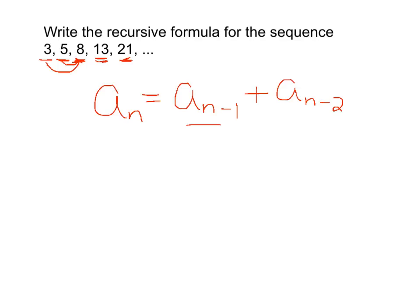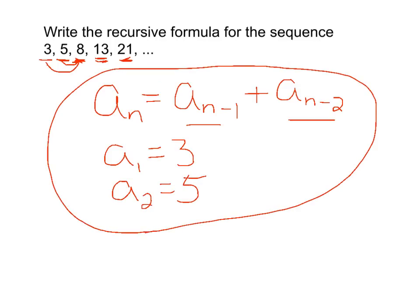Now, since we referenced two previous terms in the formula, we need to give two starting terms. So we're going to let people know that the first term, a sub 1, is 3, and that the second term, a sub 2, is 5. This gives people the recursive formula for this sequence.